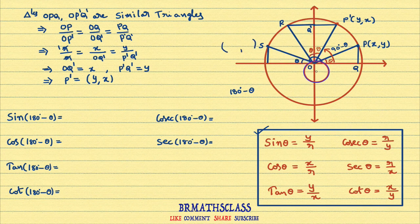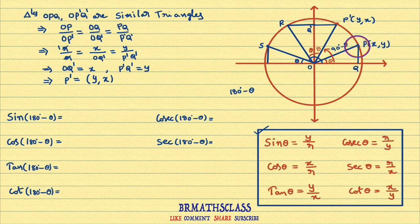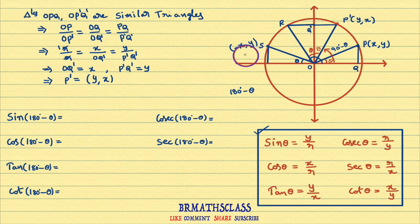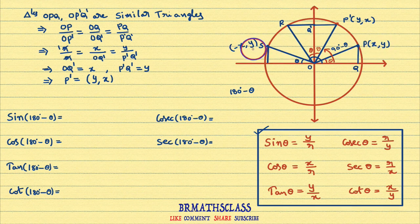The circle is symmetrical about the coordinate axis. Here P is (x, y). By using the symmetry of the circle, you can write the coordinates of S by seeing the coordinates of P. The x coordinate in the second quadrant is negative, so it becomes minus x. In the second quadrant, y is positive only. So the coordinates of S are (minus x, y). For example, if (2, 3) is on the circle, then (minus 2, 3) also lies on the circle.